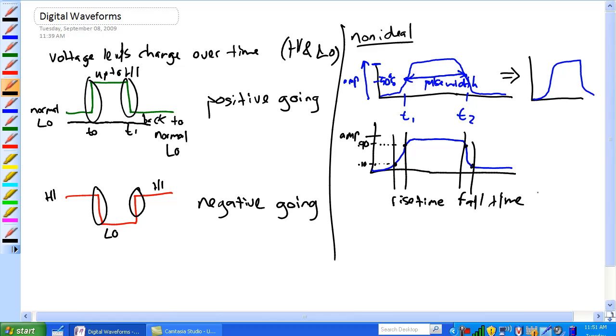The more non-ideal it is, the more of a bum signal it is, the longer it'll take for rise time and fall time. So again, there's two types of... actually, let's go to a different page here.